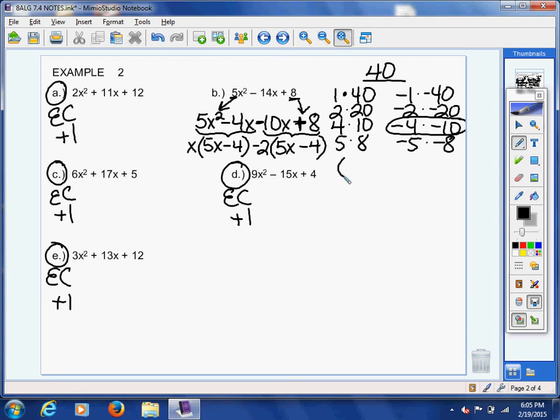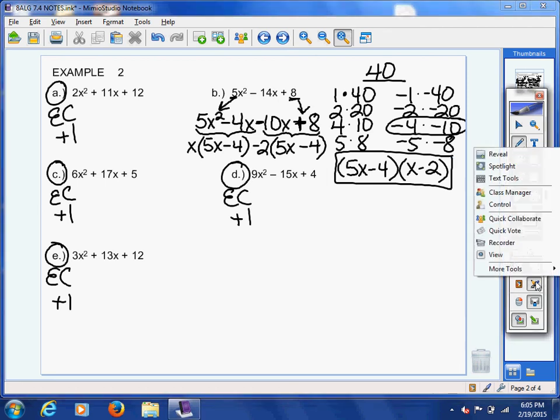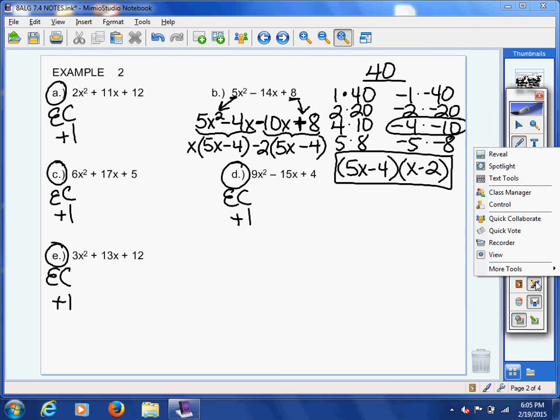We have common binomials, so we're going to pull that out, 5x minus 4, and then we're going to write whatever's left behind and put it right there. And there you go. Letter D is just like the one I showed you. A, C, and E are all like the positive ones I did in Example 1. Give it your best shot. I bet you're going to do a great job and bring me some questions tomorrow.